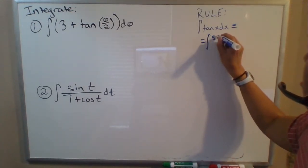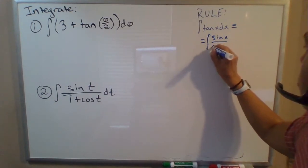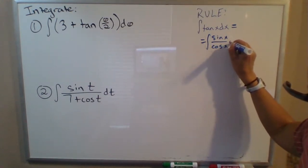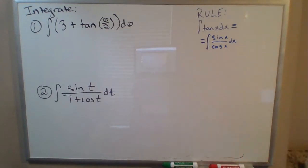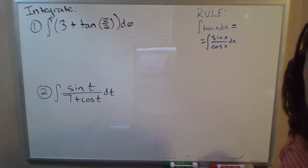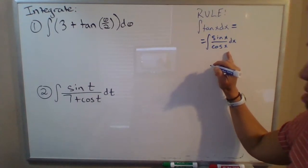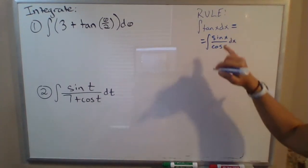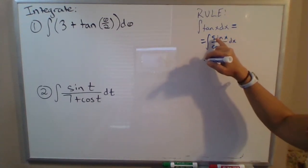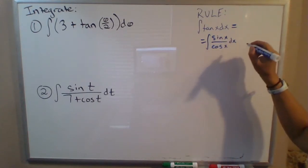So if tangent x can be written as sine x over cosine x, this is actually one of those integrals of the form 1 over u du, where if u is cosine of x, then du is negative sine of x.